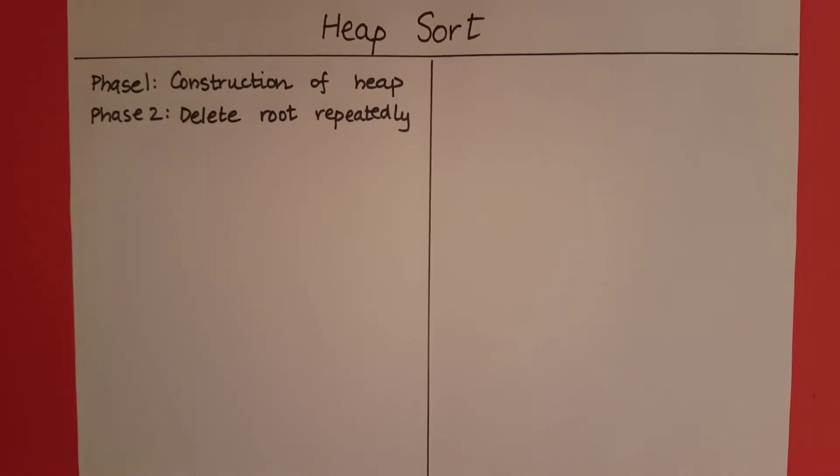Then we will keep removing the root. At every instance the root is going to be the smallest element given the set of elements included in the heap, because for a min heap every node must be smaller than its children. So that is why heap sort is going to work.